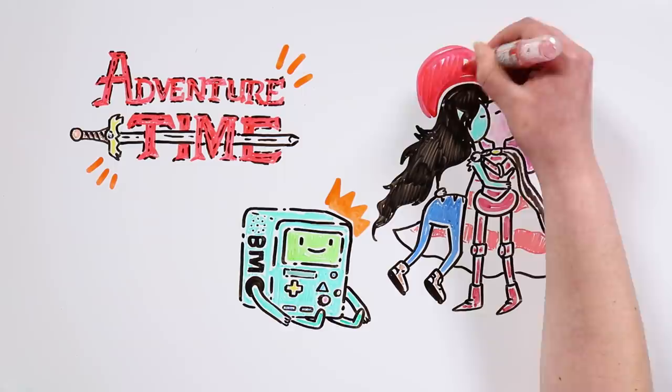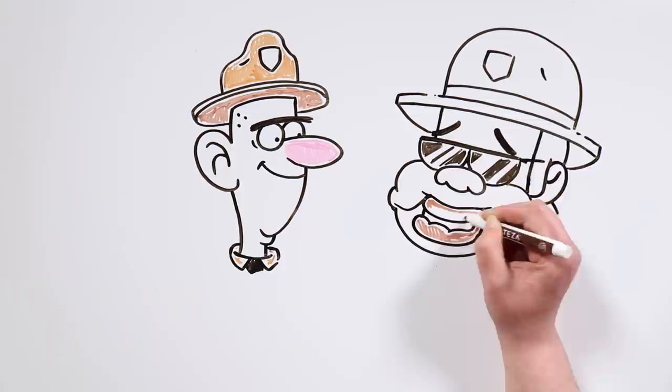Also, in the last episodes of Gravity Falls we found out that the police officers Bulb and Darland are actually a gay couple.